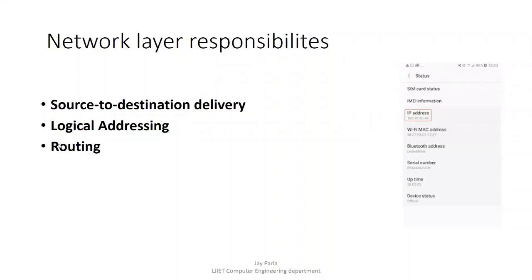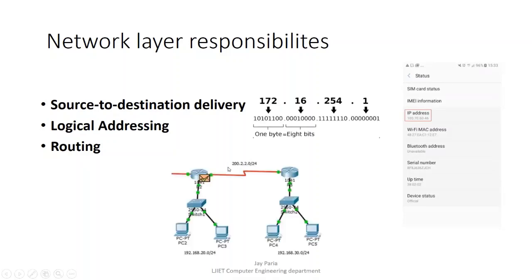The next responsibility of the network layer is routing. Routing decides which path your packet will follow. For example, if you want to send data from your PC to a friend living in another city, the network layer defines which path the packet will follow. Since there are lots of routers and devices between two cities, the network layer decides the most efficient path so that the packet is delivered quickly and efficiently.